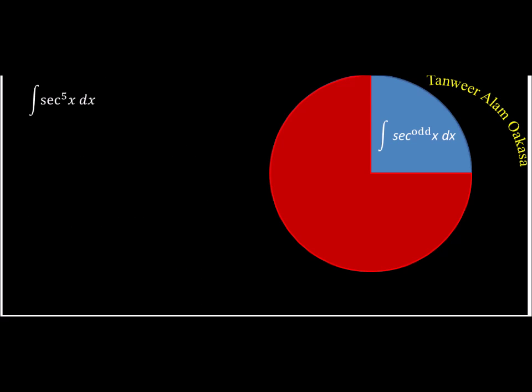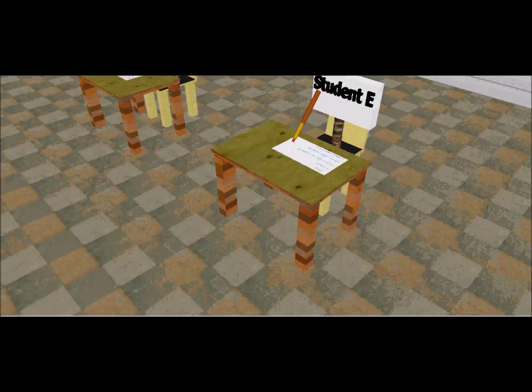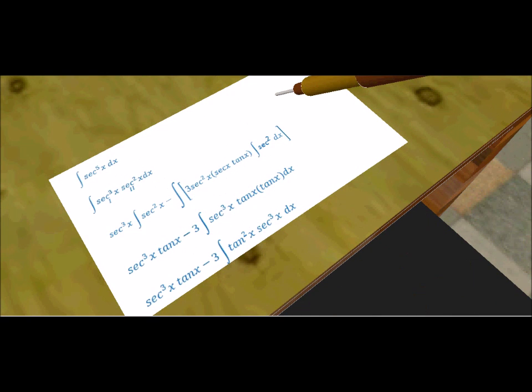Now there is an exercise: find the integration of sec⁵(x). A student explains: since it is sec to an odd power, split into sec³(x) and sec²(x), take sec²(x) as the second function, and apply integration by parts. The result so far is sec³(x)tan(x) minus 3 times the integral of tan²(x)sec³(x).